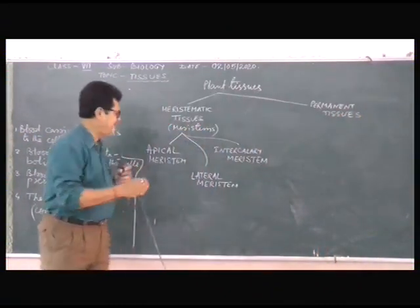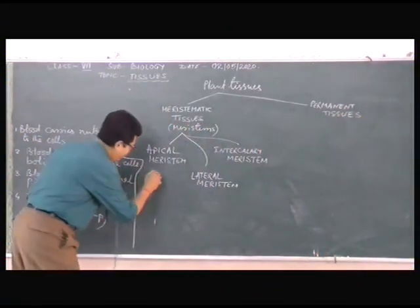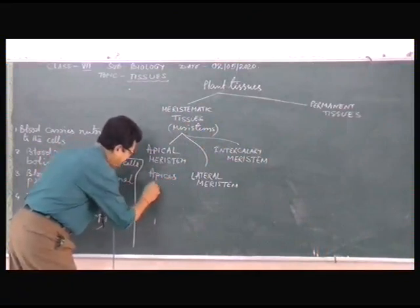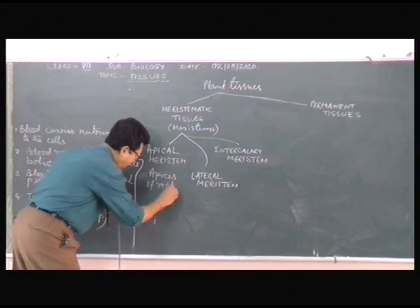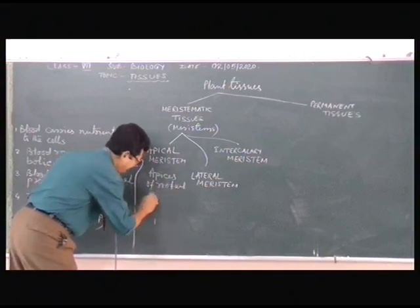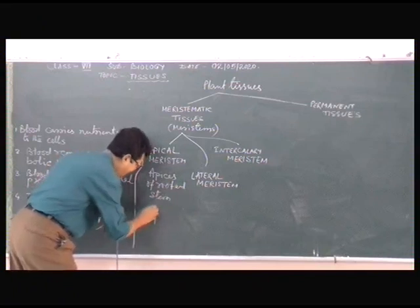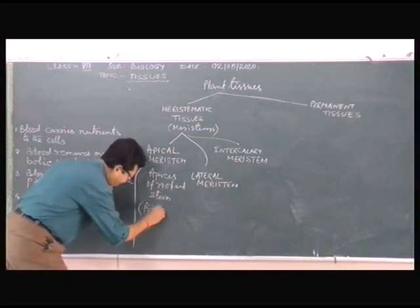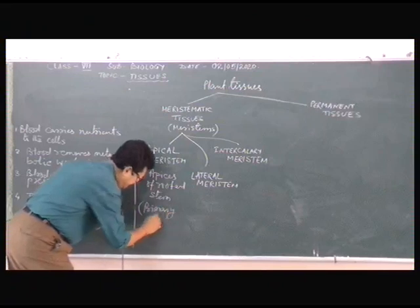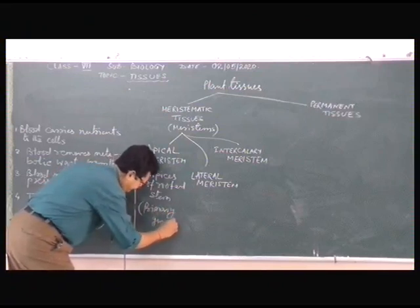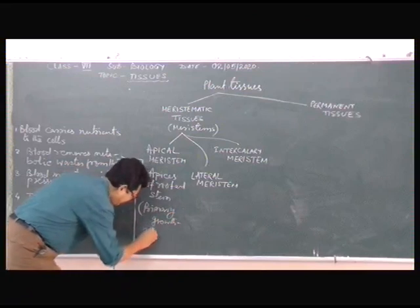Apical meristem, as the name suggests, is found at the apices — that is, the tips of the root and stem. It is meant for primary growth, that is, growth in length.